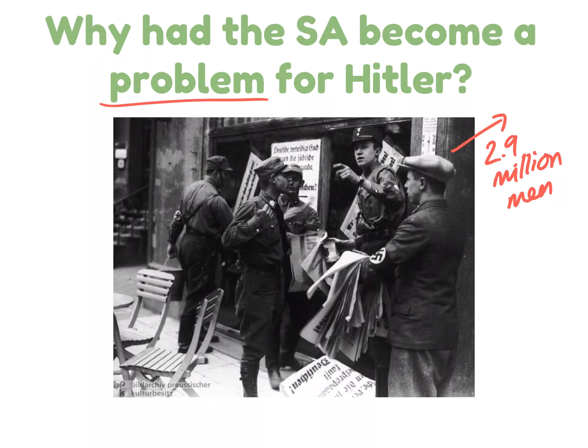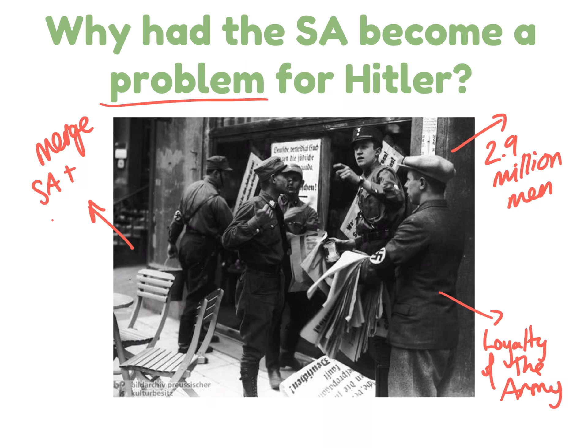In the past the SA had helped destroy Hitler's enemies, but things had changed — Hitler now needed the loyalty of the army, particularly from the generals who led the soldiers. That loyalty was needed if Hitler was to achieve his aims regarding Lebensraum, moving eastwards to take over countries such as Russia and Poland. In addition, Ernst Röhm had said he wanted to merge the SA with the army, which the army generals did not want at all.